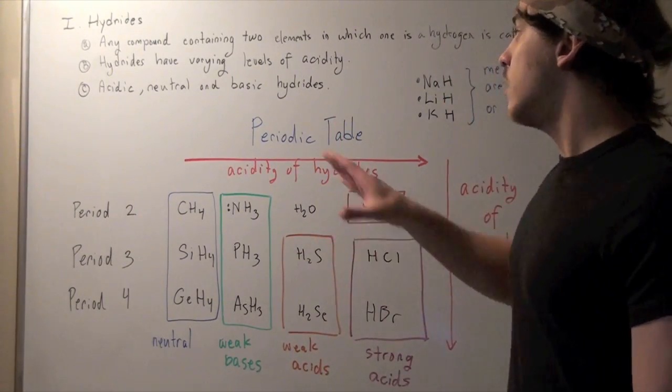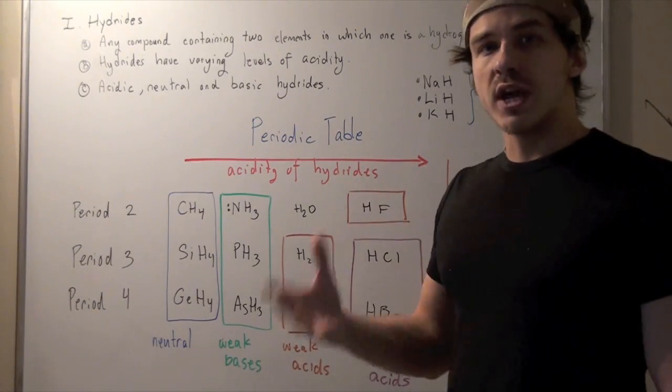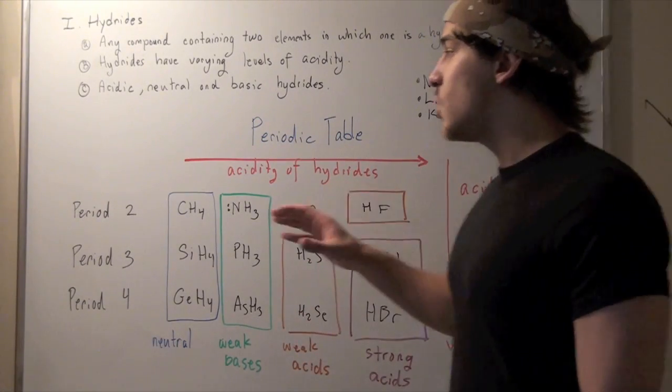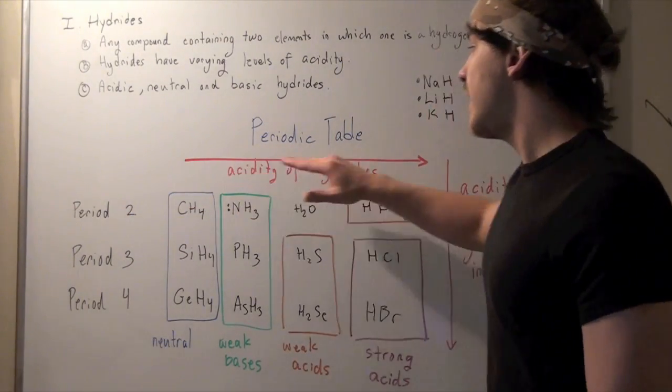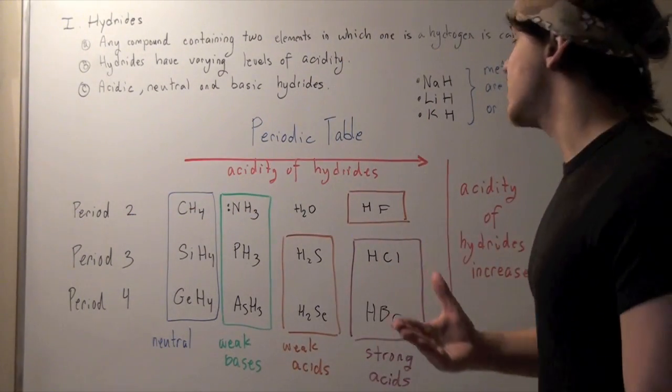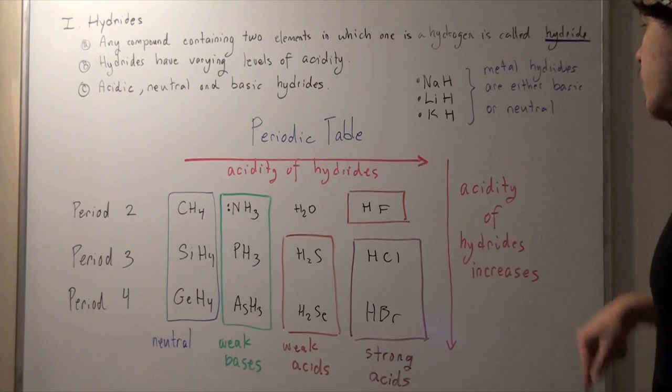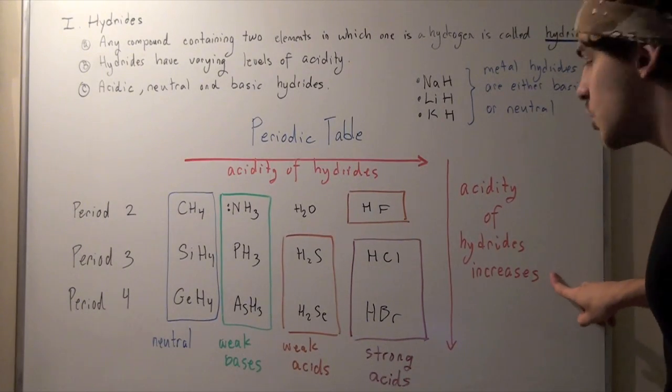If we look at the periodic table, we see a trend. As we go across a period from left to right, the acidity of hydrides increases, and as we go down a group, the acidity of hydrides also increases.